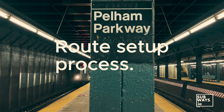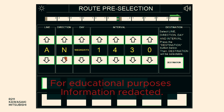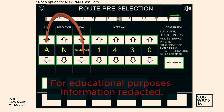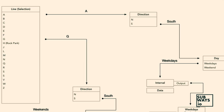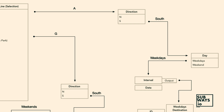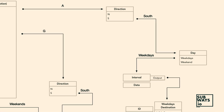To set up the AAS: Step 1 — the crew inputs the line letter or number. This allows the onboard computer to access data specific to the train's assigned line. Step 2 — selects the direction of the train, northbound or southbound. This enables the system to determine station progression and orientation based on the train's direction of travel.